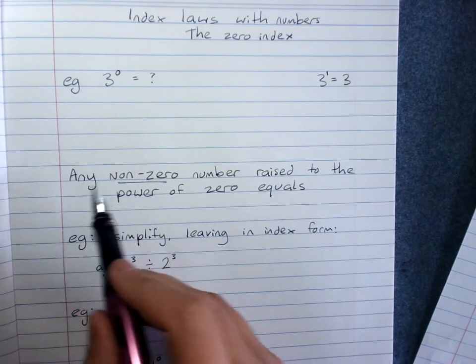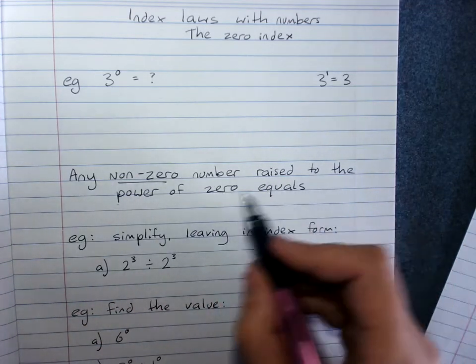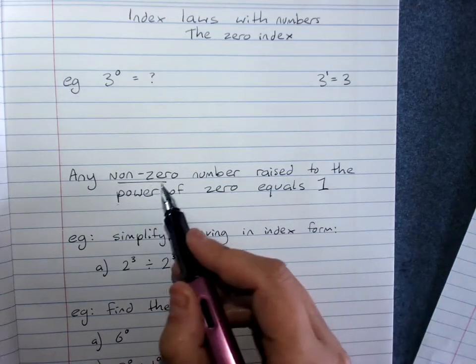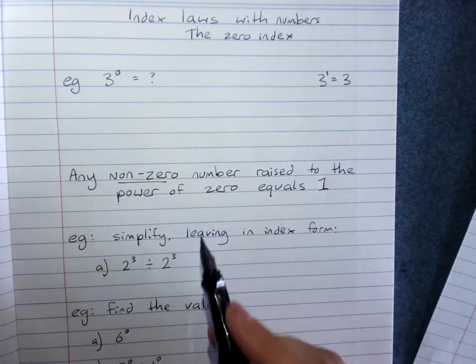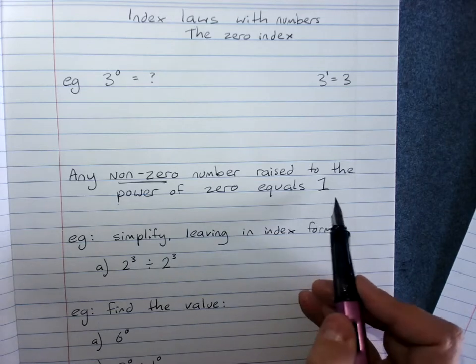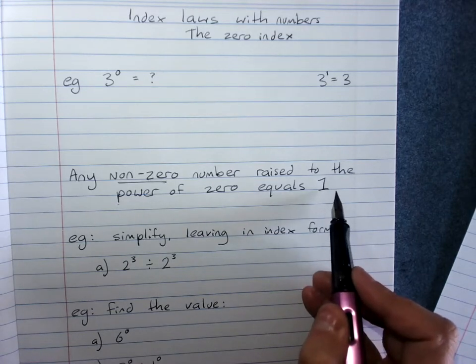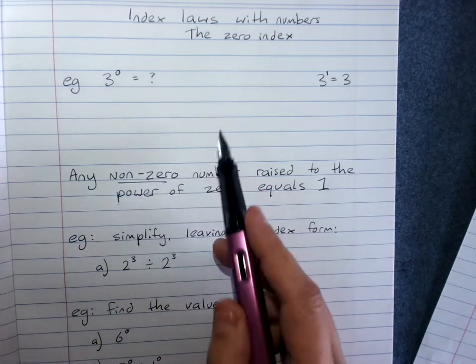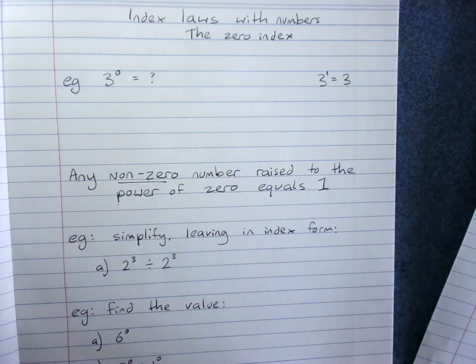So any non-zero number to the power of 0 equals 1. It doesn't work for 0, but anything else, anything to the power of 0 is 1. Now I'll show you why that is, but if you don't get it, that's okay.